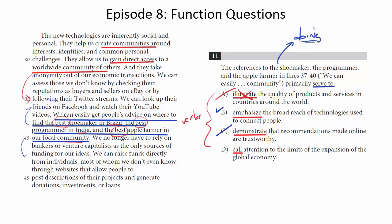D, call attention to the limits of the expansion of the global economy. Nothing here says anything about the limits of the expansion, if anything just the opposite, that this is going to be a way to expand a global economy in a way beyond which we couldn't do before. So we can get rid of D and B is going to be the best answer.